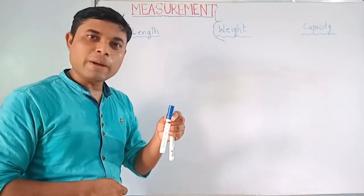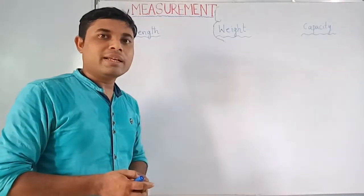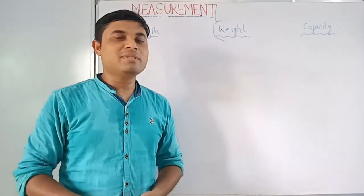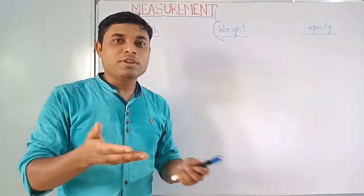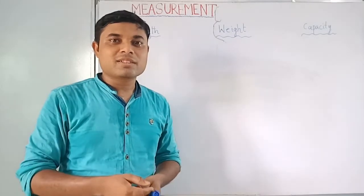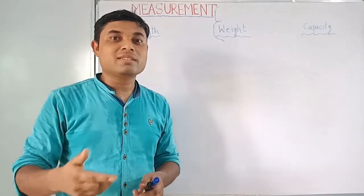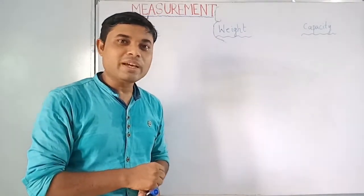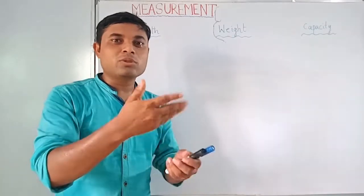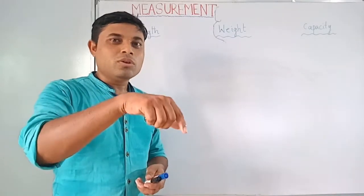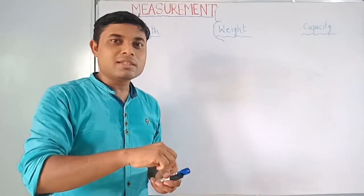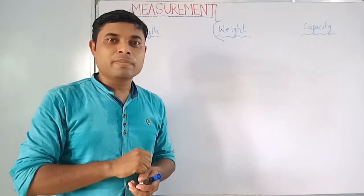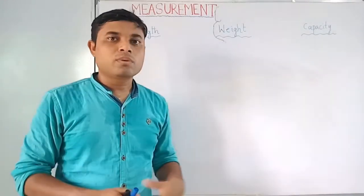For example, this marker — how much long from this point to this point, that is length. In sports day, when you participate in the 100 meters race, from one point to another point the distance is 100 meters. Similarly, the distance from Kolkata to Delhi — that is also a length.